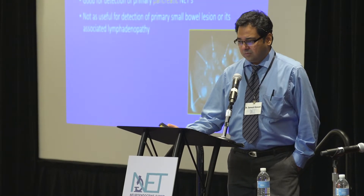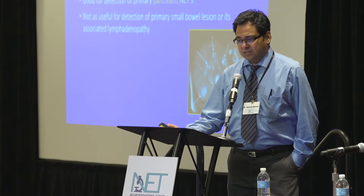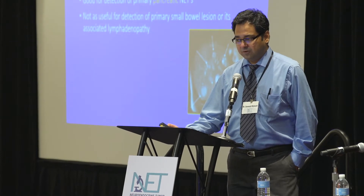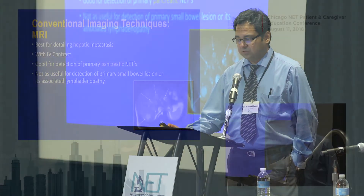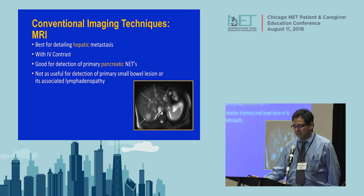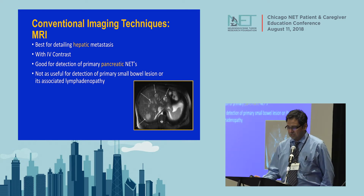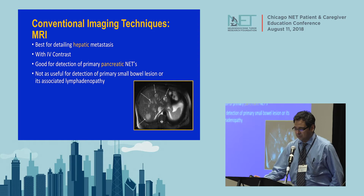Similarly for MR, it's best for detailing hepatic metastasis and good for detecting primary pancreatic tumors. An MR axial slice image shows multiple round hypodensities — areas of metastasis — in the liver.